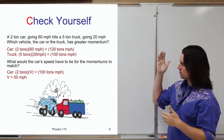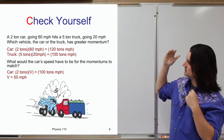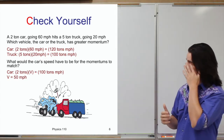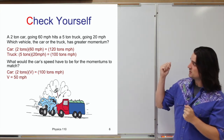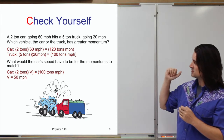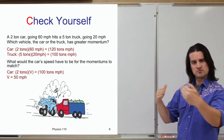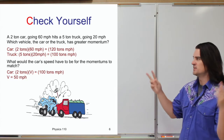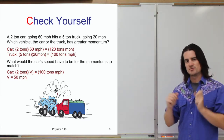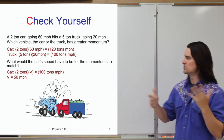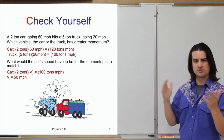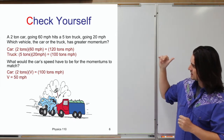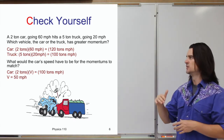We know the mass and the velocity — or at least the speed — so we can calculate the momentum of each object. The car is two tons times 60 miles per hour — mass times velocity — giving 120 ton-miles per hour. The truck is five tons times 20 miles per hour, giving 100 ton-miles per hour. So the car has the greater momentum, even though it's much smaller.